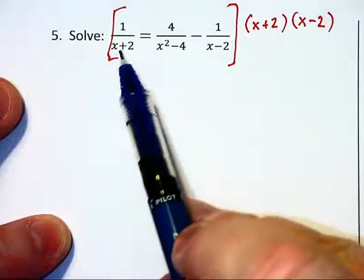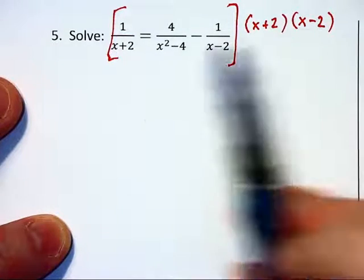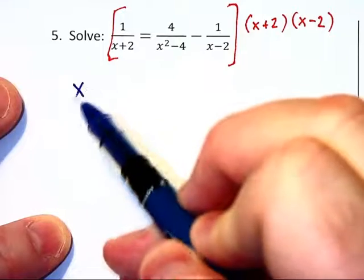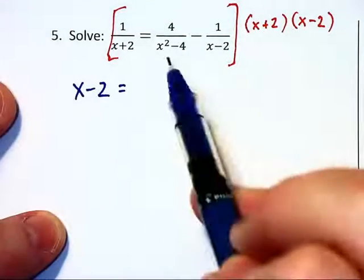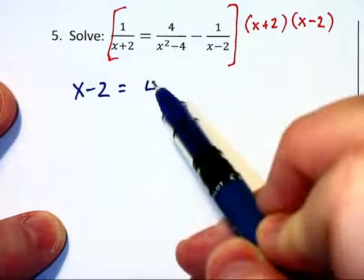In the first fraction, the x plus 2's cancel, leaving x minus 2 times the 1, or just x minus 2. On the right, in the first fraction, we cancel the whole thing out, leaving just the 4.